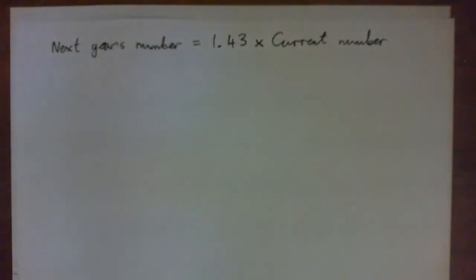Okay, so we're going to try to tackle these questions here. So what I want you to notice is that they've given us a kind of a formula here. It says next year's number equals 1.43 times current number.